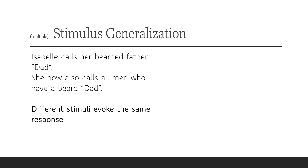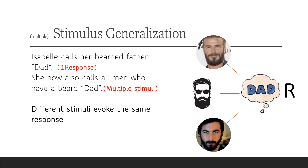Isabel calls her bearded father 'dad.' She now also calls all men who have a beard 'dad.' Different stimuli evoke the same response. The response is 'dad' — only one response. The multiple stimuli are all the men who have a beard. So we have one response, which is Isabel saying 'dad,' and multiple stimuli: David Beckham with a beard, a picture of a bearded man, and a random picture of a bearded man she will also call dad. One response, multiple stimuli.